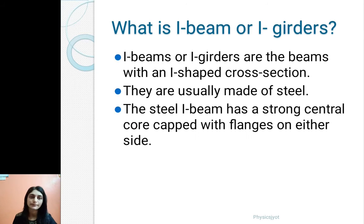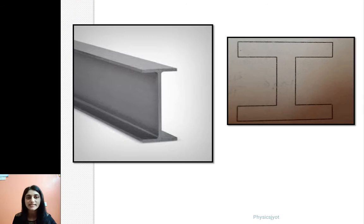Now they are usually made of steel, and the steel I-beam has a strong central core capped with flanges on either side. And that is how it looks like a letter I, like this beam you must have seen.